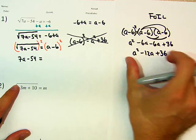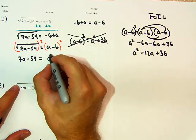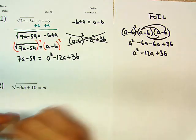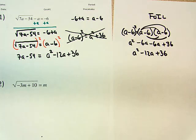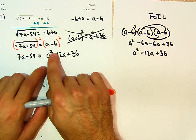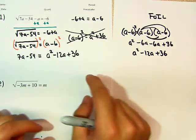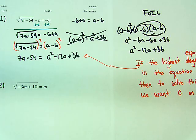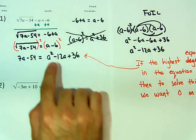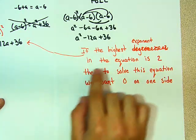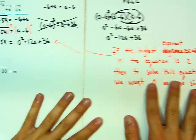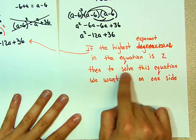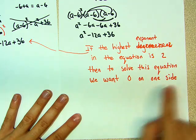So then this is this, so we bring this here. Now we have a squared minus 12a plus 36. Now, in your notes from that lesson, what was the thing? Here we have degree 2. If we have degree 2, what do we want to do? I'm going to pause the video and write it down, but try and guess what I'm going to write. The highest exponent in the equation — if we look at all the exponents in this equation, if the highest exponent is 2, then to solve this equation, we want 0 on one side.